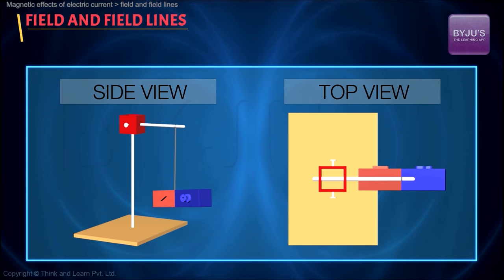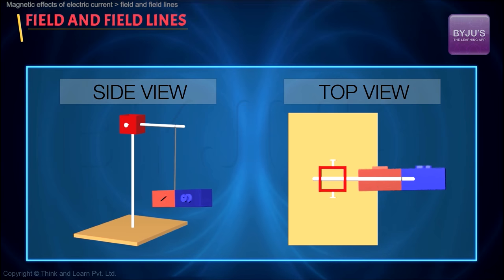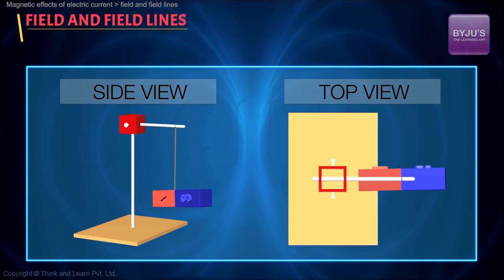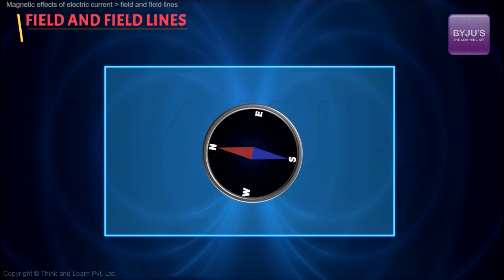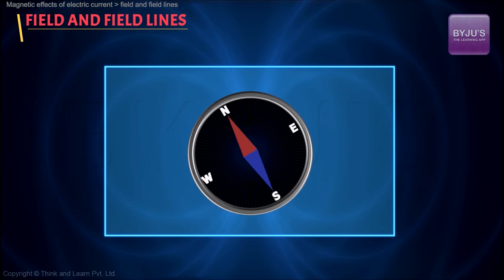Now why is that interesting? Because even if you turn it around and leave it, it will somehow go back to that direction itself. Why exactly does this happen? You would have already noticed it's in one way behaving like an already known object — a compass. So it's behaving like a big compass.